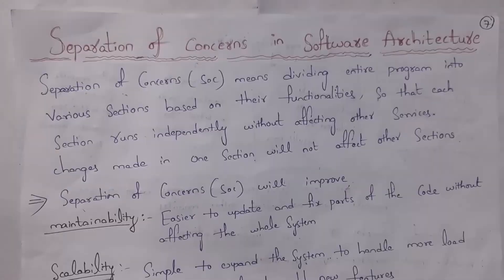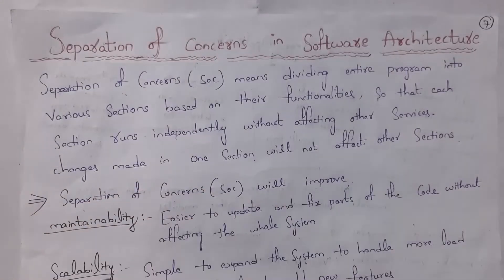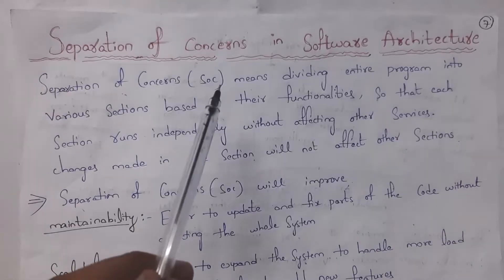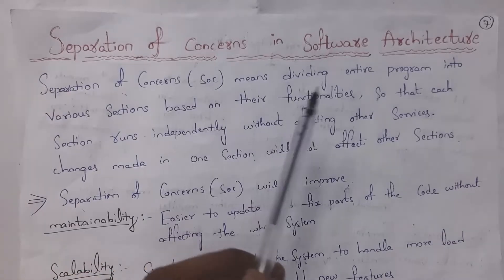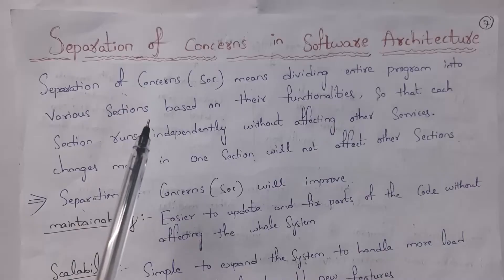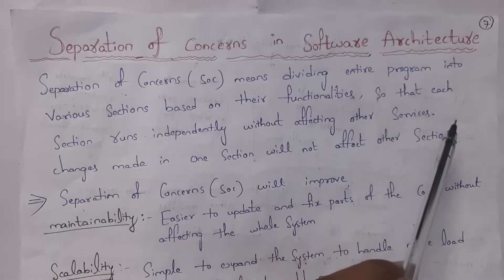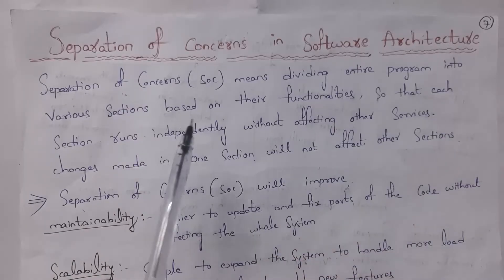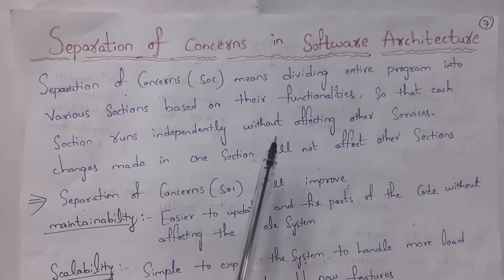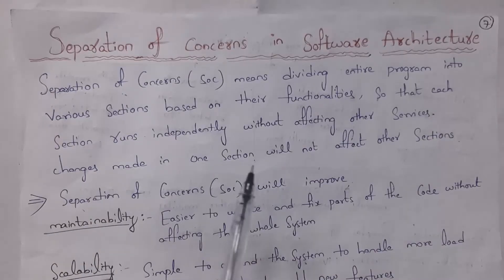First I will explain separation of concerns in software architecture. Separation of concerns means dividing an entire program into various sections based on their functionalities so that each section runs independently without affecting other services. Changes made in one section will not affect other sections.